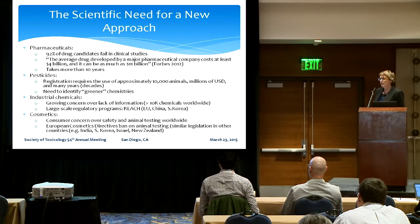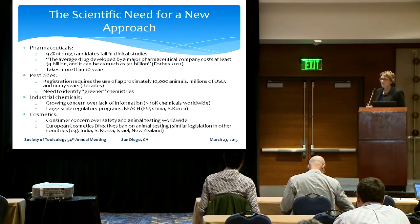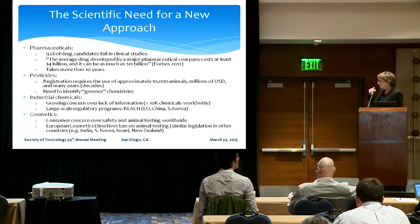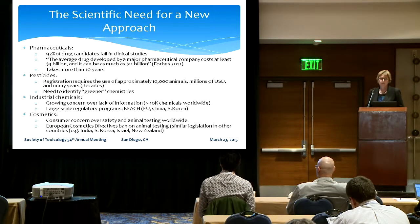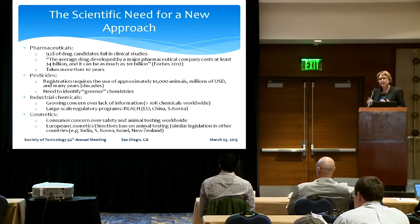The pesticide sector has similar concerns in that to register a pesticide requires a lot of testing, millions of dollars of investment, at least 10,000 animals, and again a decade or more of assessment. There's also a lot of desire to identify greener chemistries and alternate chemistries for pesticides, and that needs to be done in a more efficient way than we have been historically doing it.